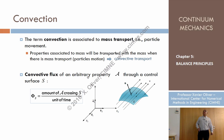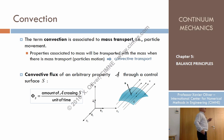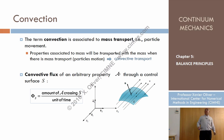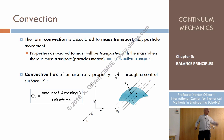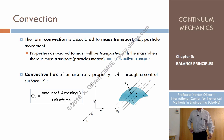We can talk about the amount of a property — call it A — that crosses the fixed surface. This property, carried by particles, crosses the surface as particles do. We can quantify the amount of the property — stress, density, mass — that crosses the surface due to the motion of particles per unit of time. This is what we call convective flux.